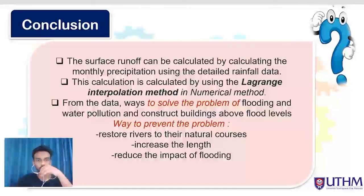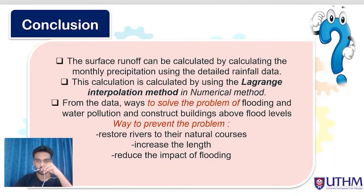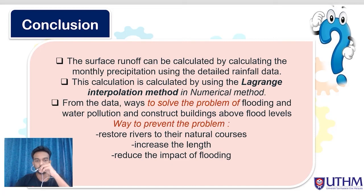Conclusion: The surface runoff can be calculated by computing the monthly precipitation using detailed rainfall data. The calculation was performed using the Lagrange interpolation method in numerical methods of mathematics. From the data, we need to address problems of flooding, water pollution, and constructing buildings above flood levels. Several ways to prevent these problems include restoring rivers to their natural courses, which can increase flow length and reduce the impact of flooding. Thank you.